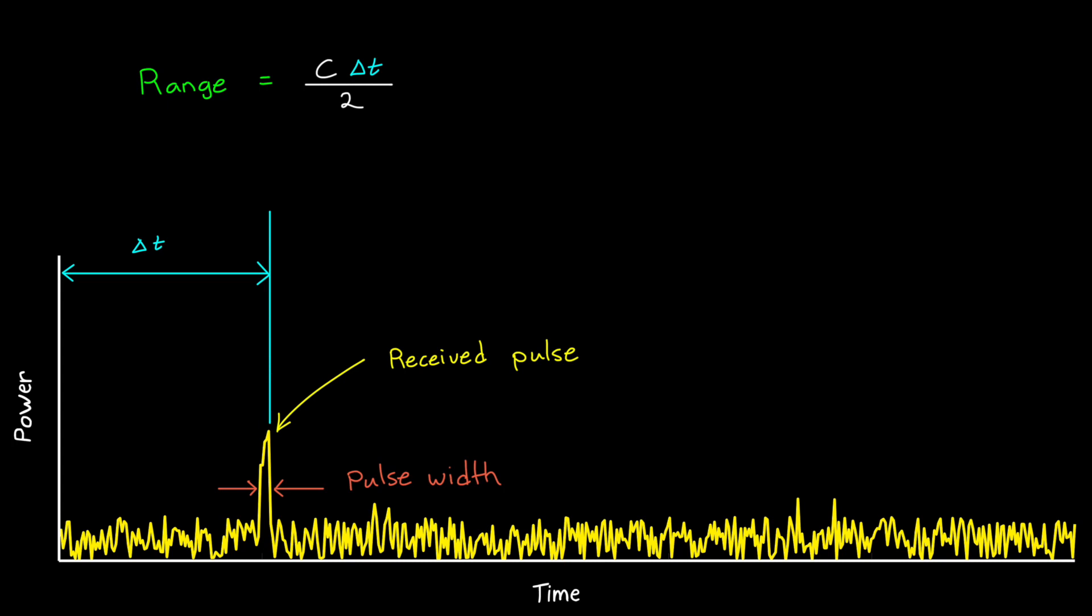Light can travel about 300 meters in that amount of time, and so we might want to come up with a way of determining exactly when the pulse returns to less than 1 microsecond, if we need better accuracy.